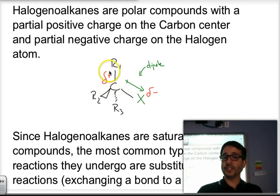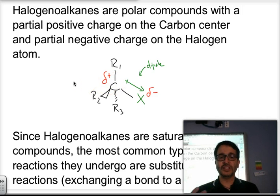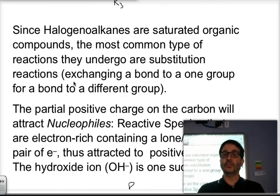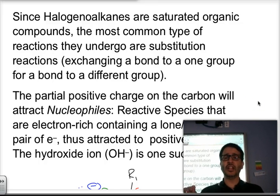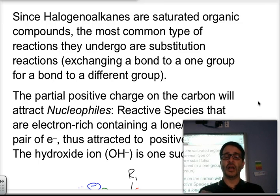Because of this positive center, we are going to attract species that are electron-rich. Those species are called nucleophiles. A nucleophile is a reactive species that contains a lone pair of electrons and therefore is attracted to a positive center, like the carbon that has a partial positive charge.